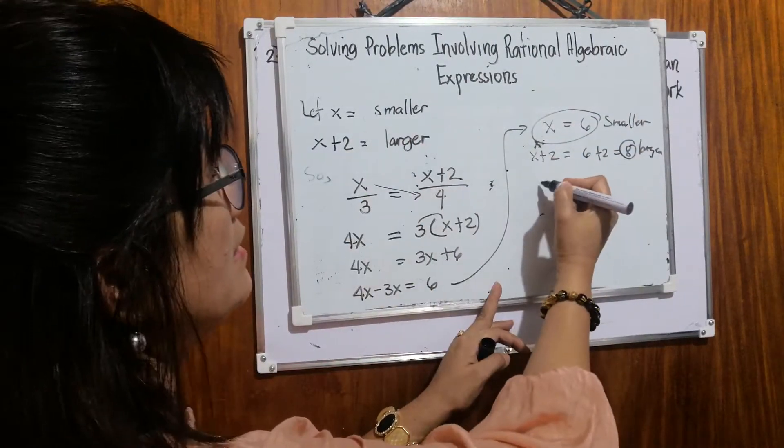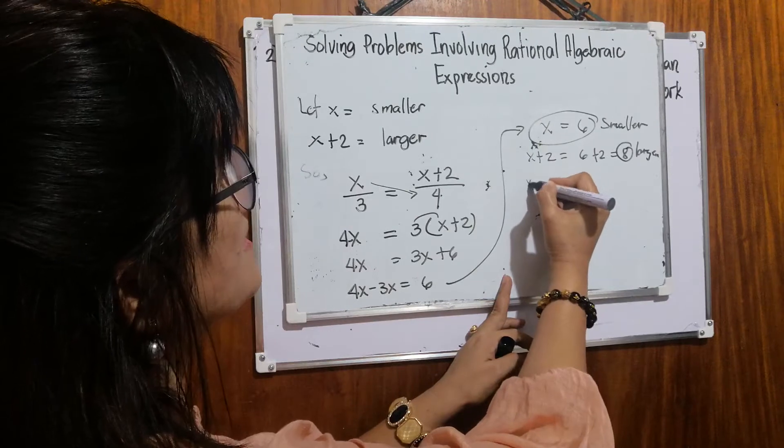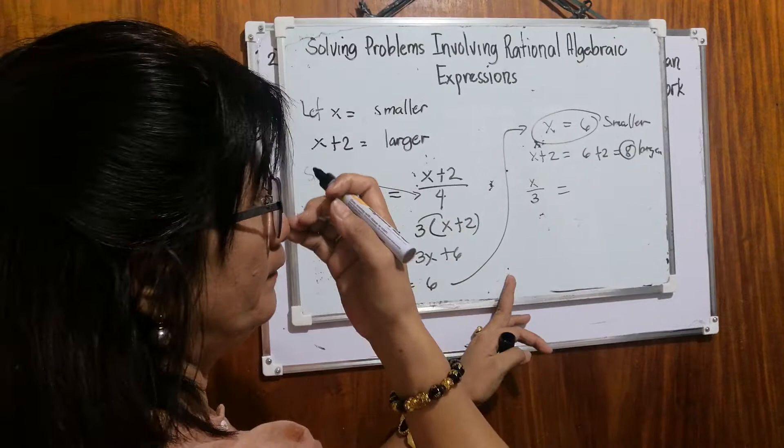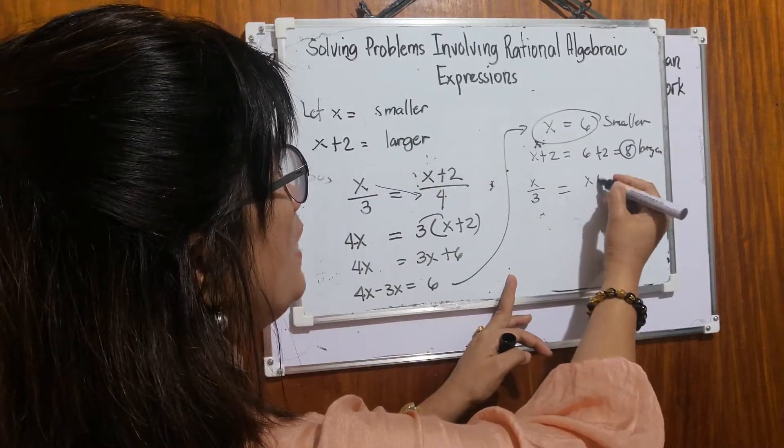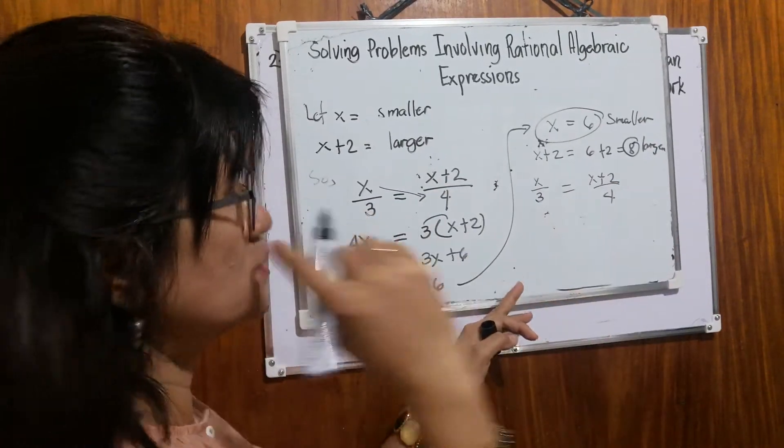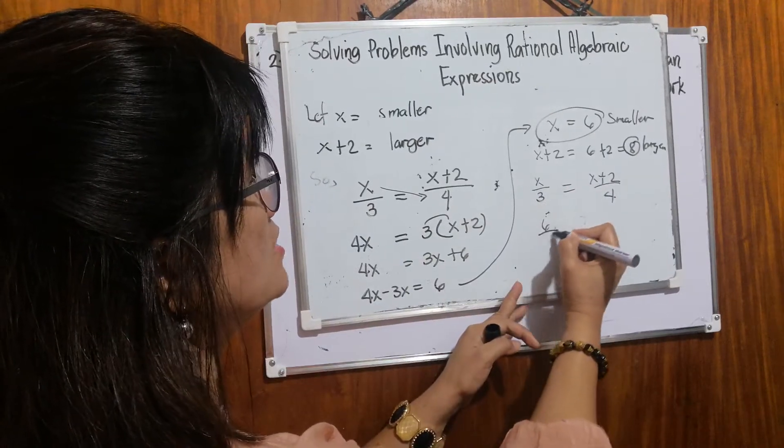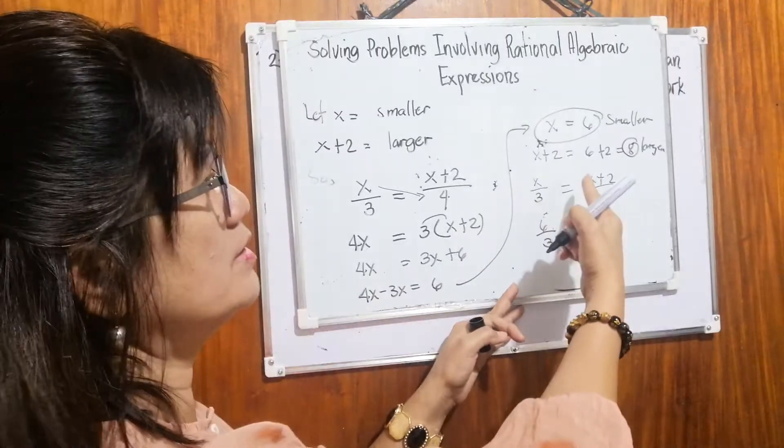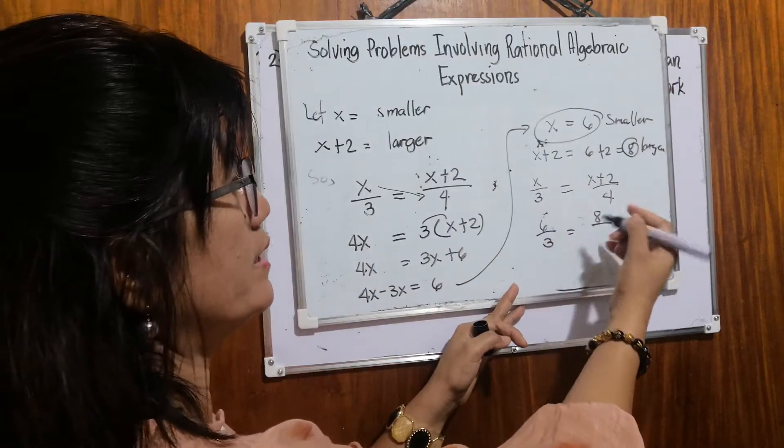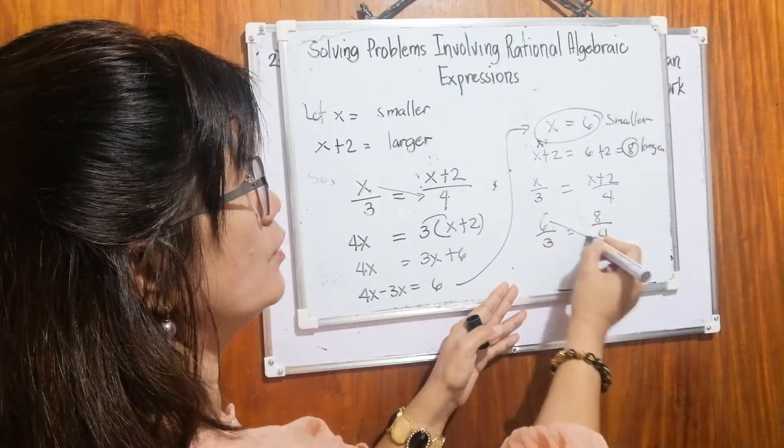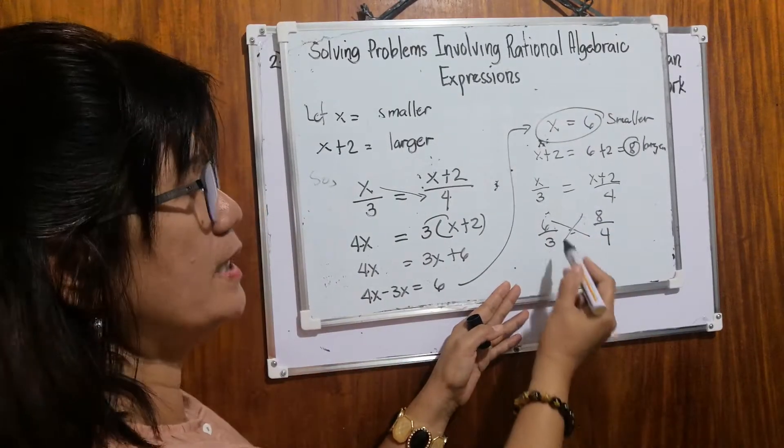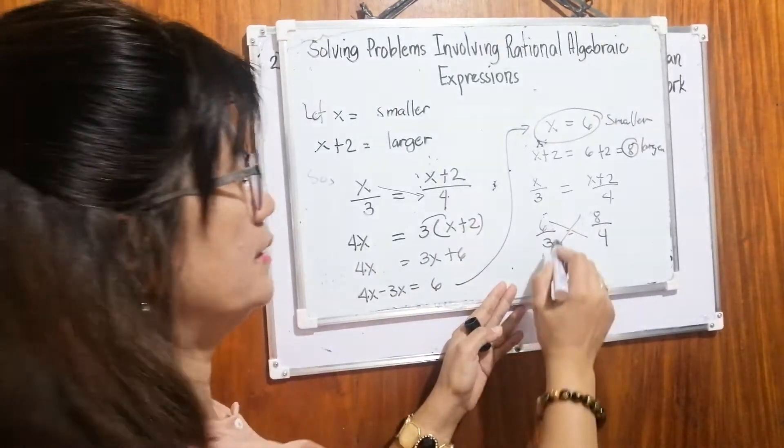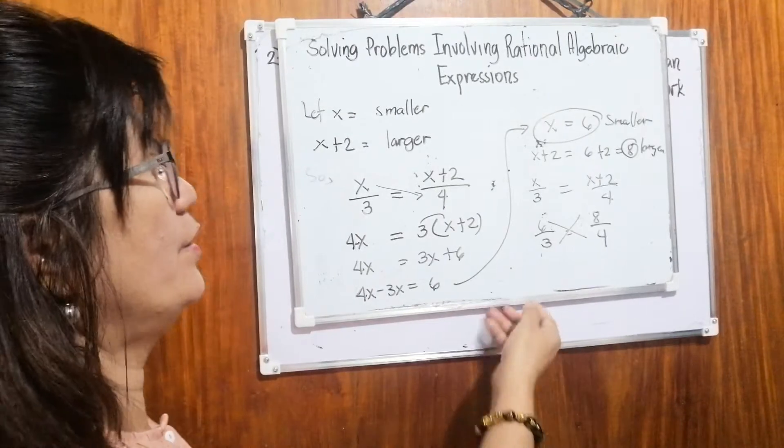x over three is equal to x plus two over four. They're supposed to be equal. So this is six over three. This is eight, because x is six. So it becomes eight over four. And then we will cross multiply. If you can see, they have the same product. Six times four is 24. Three times eight is also 24.